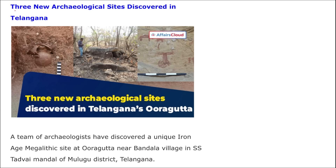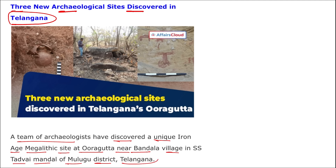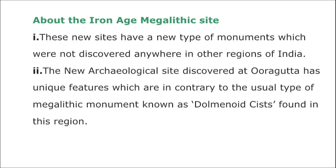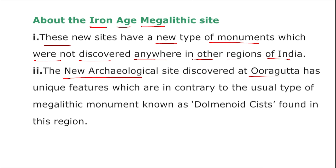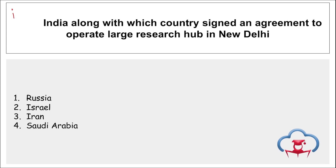Three new archaeological sites were discovered in Telangana. A team of archaeologists discovered a unique Iron Age megalithic site in Auragutta, near Bandala village in Tadwai Mandal of Mulugu district, Telangana. These new sites have a new type of monument not discovered anywhere else in India. The new archaeological sites at Auragutta have unique features contrary to the usual megalithic monuments known as the dolominoid cyst found in this region.